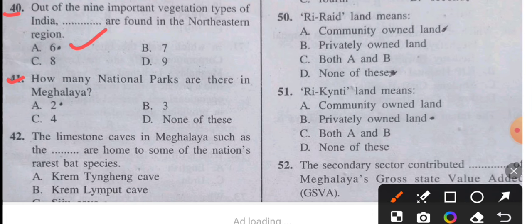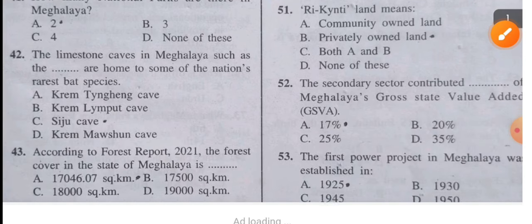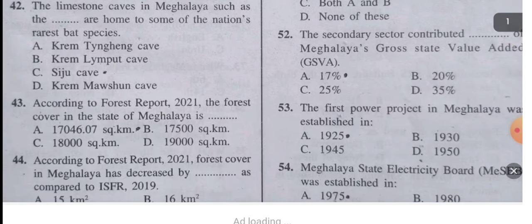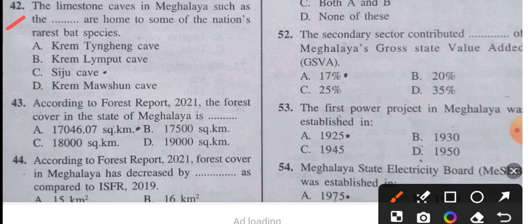Question 41: How many national parks are there in Meghalaya? The answer is two. Question 42: The limestone caves in Meghalaya, such as the Siju Cave, are home to some of the nation's various bird species.